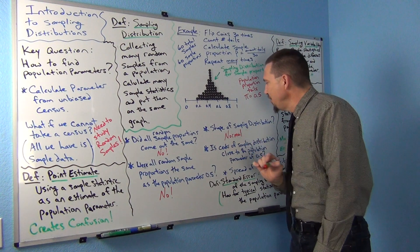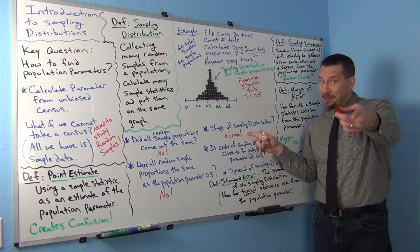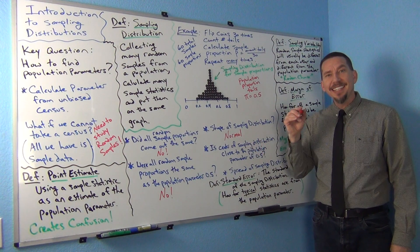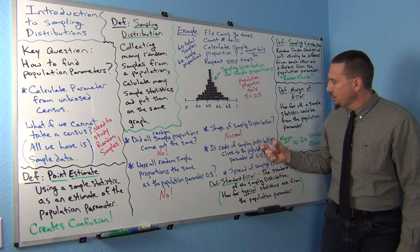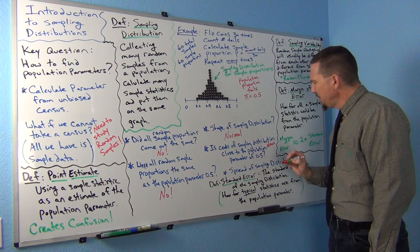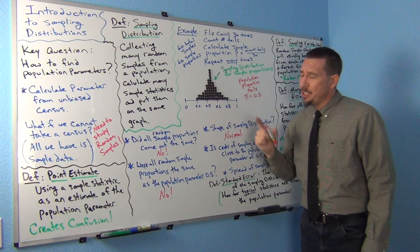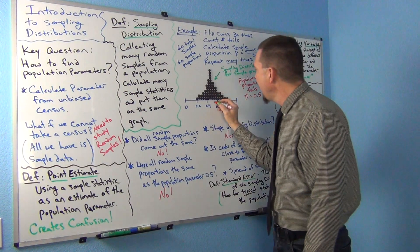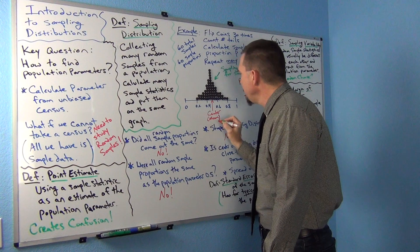We learned in the last unit that for normal data we use the mean for the center and the standard deviation for the spread. So if this is normal, then the center of this graph could be represented by the mean — the mean of the sampling distribution. In other words, the mean average of all these p-hats. Where's the center in the graph? About right here where most of the dots seem to lie — that's where the mean of the sampling distribution would fall.